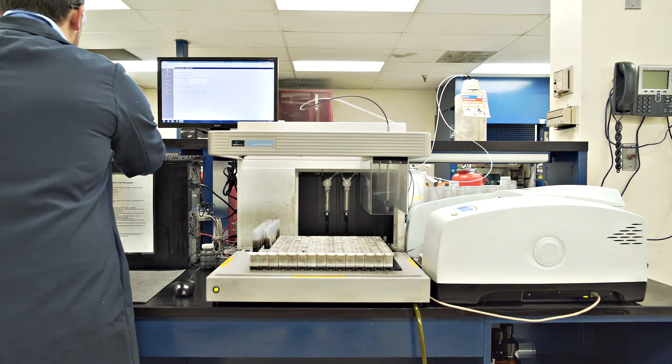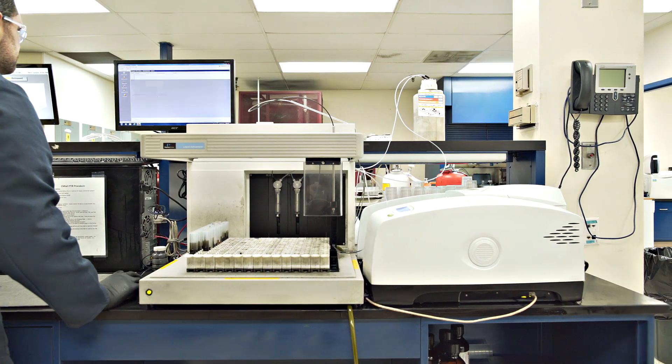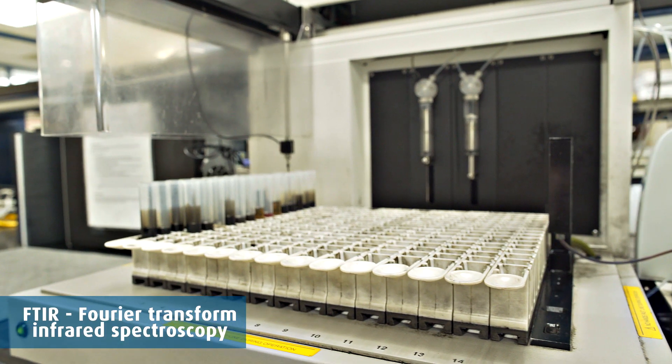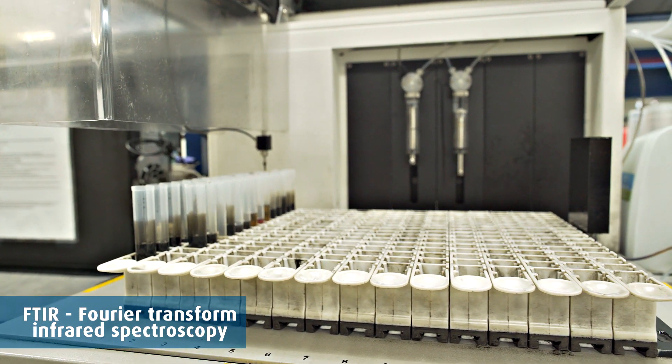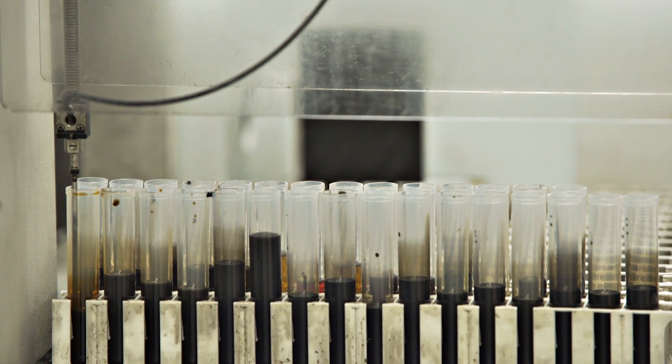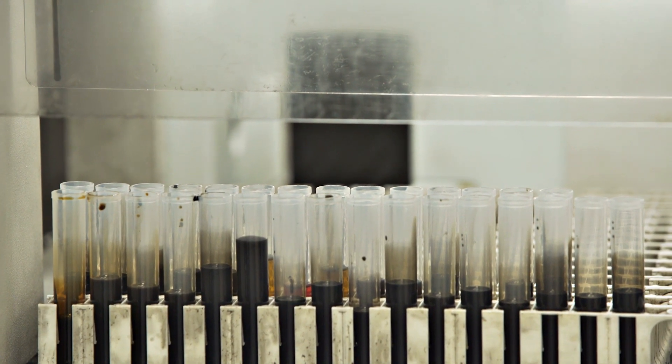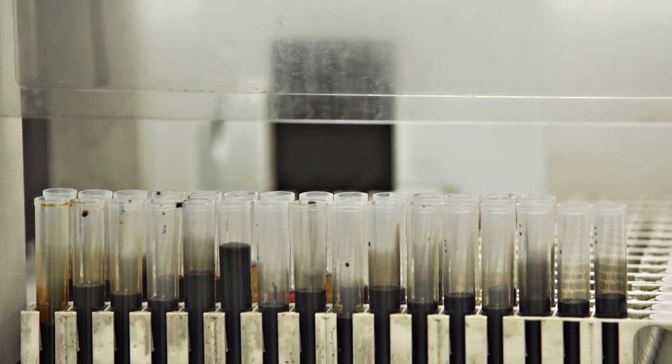As oil ages or is stressed, chemical reactions occur which shorten the life of the lubricant. The FTIR can test for the condition of the oil using infrared spectroscopy. Information such as oxidation, nitration, and sulfation can be obtained by FTIR.